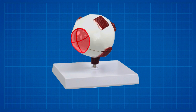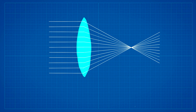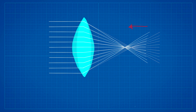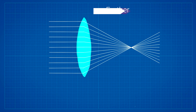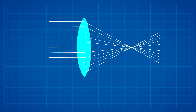Astigmatism in the eye usually results from the curvature of the cornea not being completely spherical. We know that the way light bends is heavily dependent on the curvature of the refractive medium — in this case, the cornea. A lens that is steeply curved is going to bend light stronger or nearer, and a lens that is relatively flatter is going to bend light weaker or further.